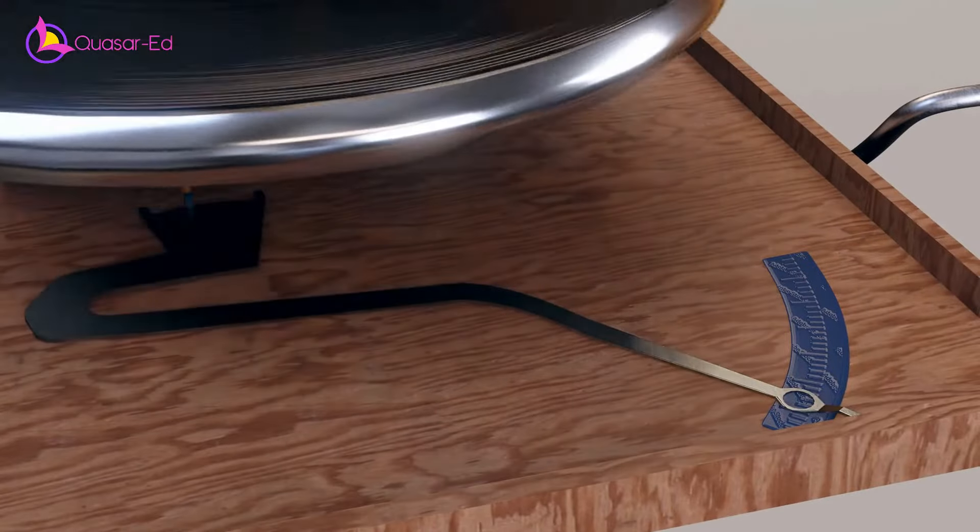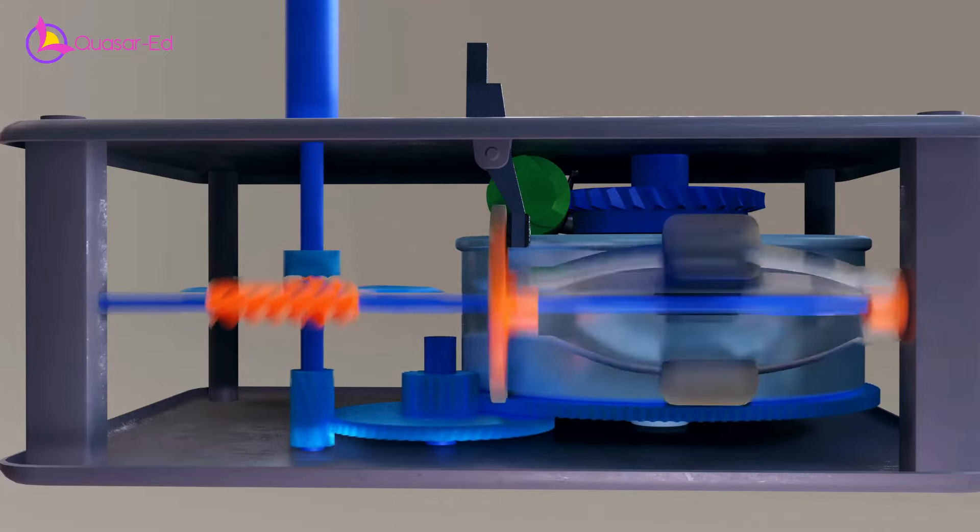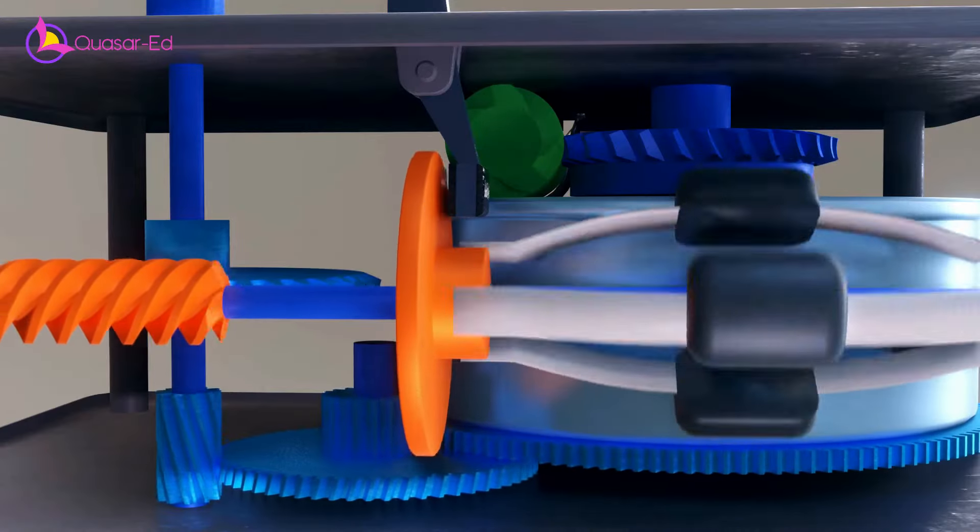When the speed is high, the weights move outwards and pull the flange towards the felt pad. The friction between flange and felt pad slows down the rotation speed.